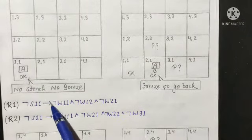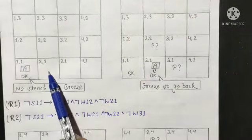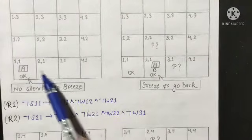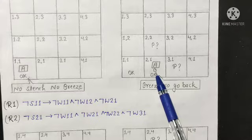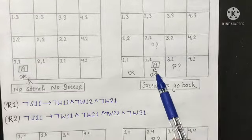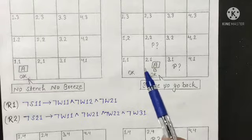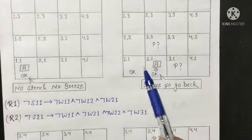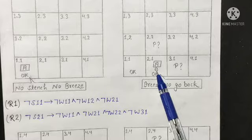This implies there is no Wumpus in room 1,1, no Wumpus in room 1,2, and no Wumpus in room 2,1. The next move of the agent is to go forward into one room. Here the agent can feel a breeze — B stands for breeze. So it would be good for the agent to go back to room 1,1, because the agent feels some breeze.